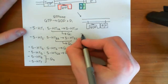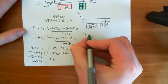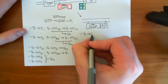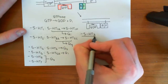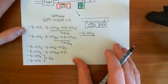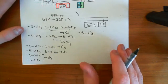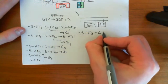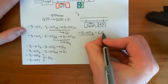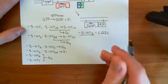Now, what we're going to do is talk about 5-HT3 receptors, which are different from all the rest because these are not G-protein coupled receptors. Instead, these are ligand-gated ion channels. Ligand-gated ion channel is often abbreviated to LGIC.